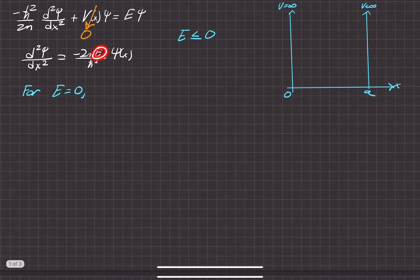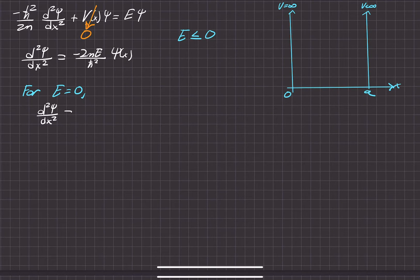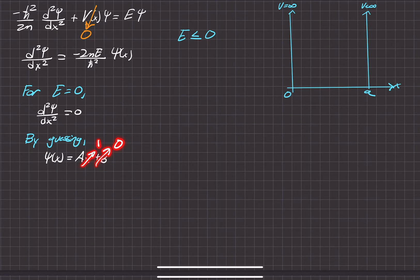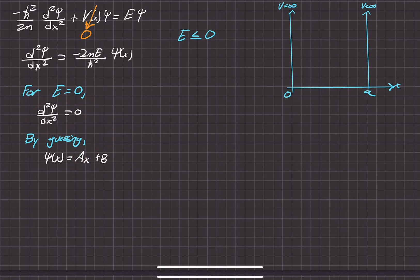If the energy is equal to 0, then this whole term will be 0, which makes it a pretty easy differential equation to solve. So if you have a differential equation that looks like that, by guessing — or if you want to sound fancier in the physics community, by ansatz — you know that the wave function is going to have some form of a constant A times x plus another constant B. If you take the first derivative of this, it ends up being just the constant A. And then if you take the derivative again, you just have 0, which fits our differential equation.